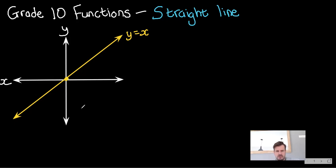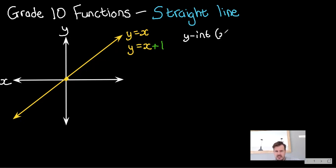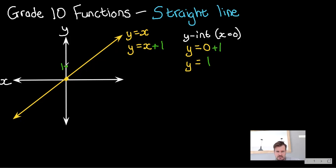If you get something like y equals x plus 1, you can use the intercept method. To get your y-intercept, you make x equals 0, so you get y equals 1 — because it would be 0 plus 1. So y equals 1, which would be up here around 1 on the y-axis.